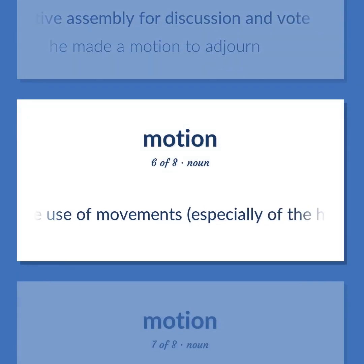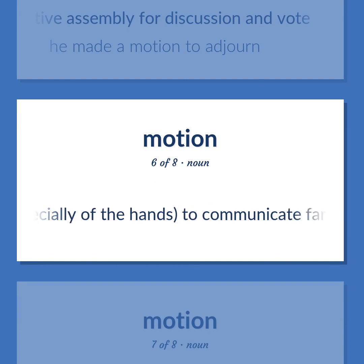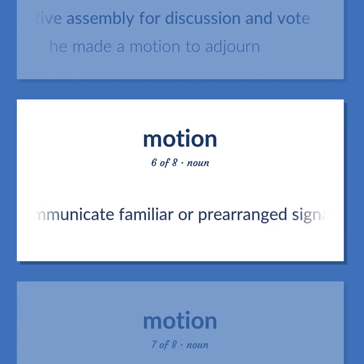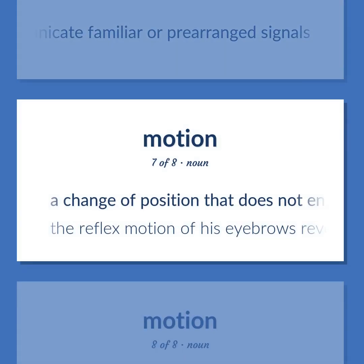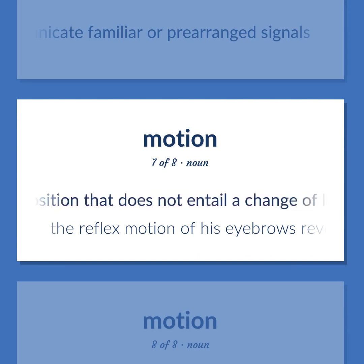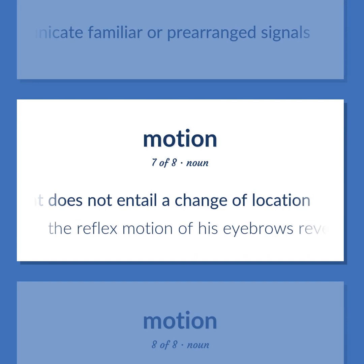Motion: The use of movements, especially of the hands, to communicate familiar or prearranged signals. A change of position that does not entail a change of location — the reflex motion of his eyebrows revealed his surprise.